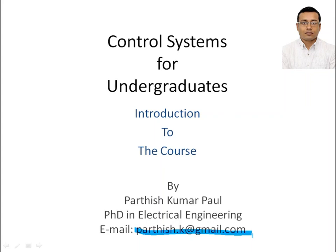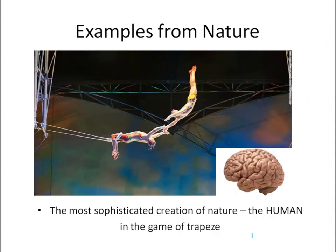Control engineers try to find things mostly practiced by nature and imitate them for the betterment of human life. You can see the example of the game of trapeze, where a very skillful play of mind is used. This is about a human mind trained in a proper way. In control systems, we are trying to find out different dimensions of the human mind so that we can make similar things — robots — which can support human life in a better way.